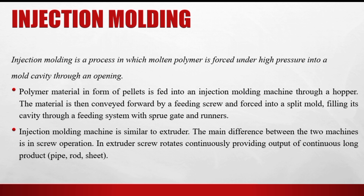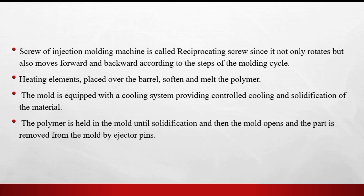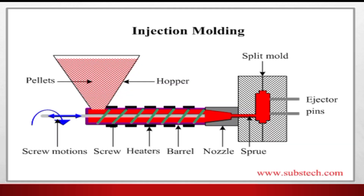The injection molding machine is similar to an extruder. The main difference is in screw operation: in an extruder the screw rotates continuously to provide a continuous long product, whereas in injection molding the screw moves forward and backward and a molding cycle is repeated.